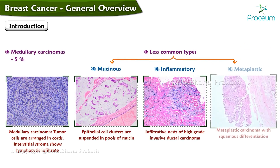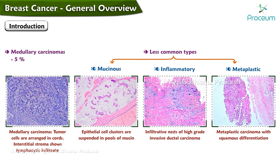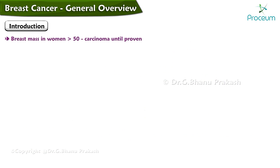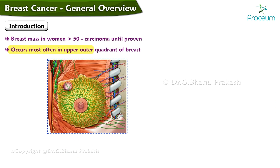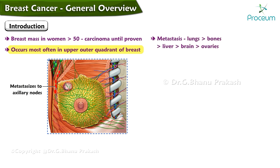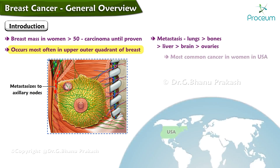Less common types include mucinous, inflammatory, and metaplastic. Remember that a breast mass in women over the age of 50 is carcinoma until proven otherwise. It occurs most often in the upper outer quadrant of the breast, which metastasizes to the axillary nodes. In decreasing frequency, metastasis is more frequent in the lungs, followed by bones, then the liver, brain, and ovaries.